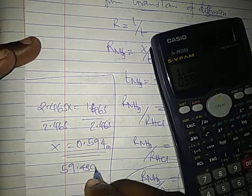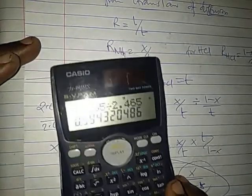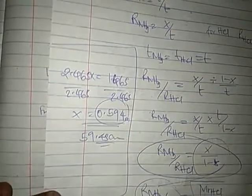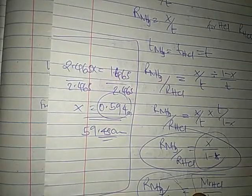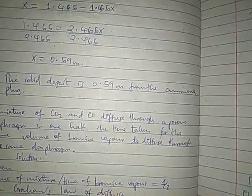0.594 meters. If you want it in centimeters, that is 59.4 centimeters. That is the value of x. So how far from the ammonia plug? The answer is 0.594 meters or 59.4 centimeters.